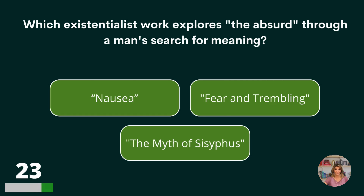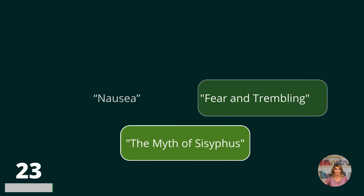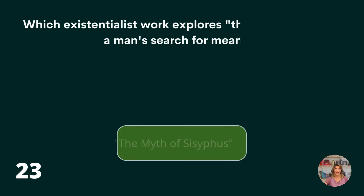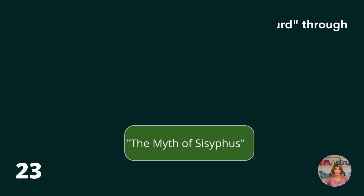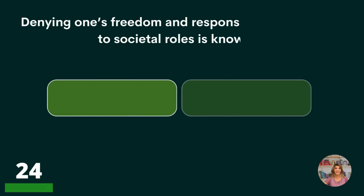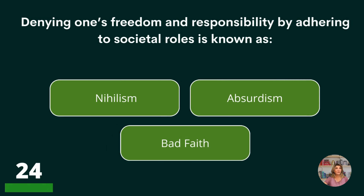Which existentialist work explores the absurd through a man's search for meaning? Nausea, Fear and Trembling, or The Myth of Sisyphus? The Myth of Sisyphus.